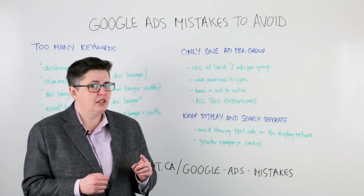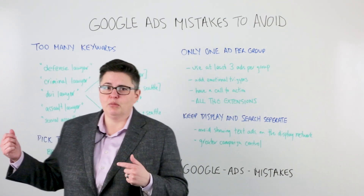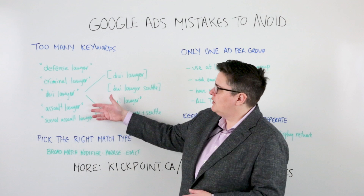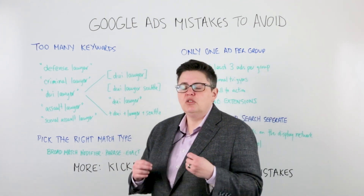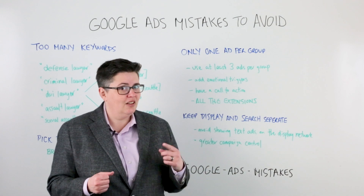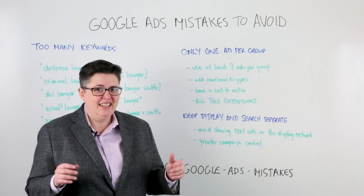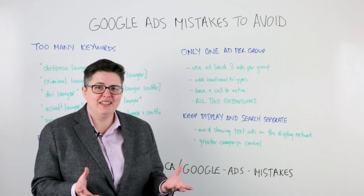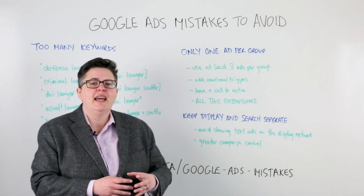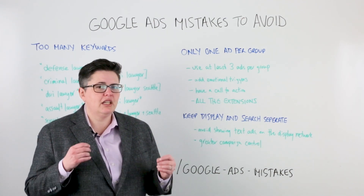One thing I do see people doing incorrectly with extensions is setting them at the campaign level when you have different ad groups covering different themes. Going back to the lawyer example, if you had an extension that talks specifically about DUI law but it was triggering on sexual assault law — you don't want that. Make sure you have fine-tuned control over your extensions, showing the right extension with the right keyword and right ad. The same goes for location extensions: don't show all location extensions everywhere. If you've got an ad group for Seattle and because you loaded all location extensions it's suddenly showing an extension for San Francisco, that's because you haven't filtered properly.